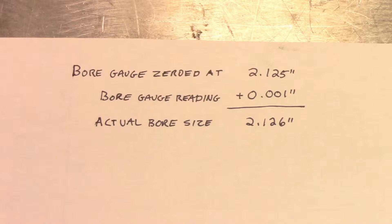Here are some examples of how to calculate actual bore size after taking a reading with the bore gauge. Let's say that our reading was positive one thousandths of an inch. We would first take the size that the bore gauge was originally zeroed to, 2.125 inches, and add the positive one thousandths of an inch. Total together, this would give us an actual bore size of 2.126 inches.